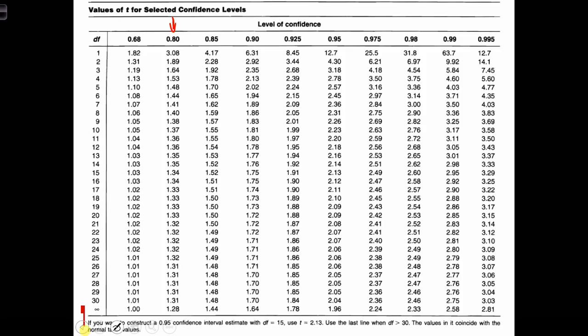Here, we have a sample size of 8, so we're going to use 7 degrees of freedom, N minus 1, which gives us 1.41.